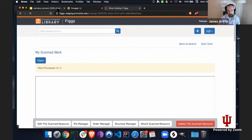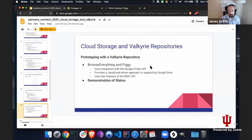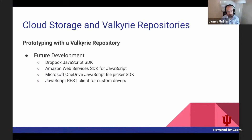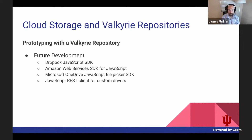From working with this Valkyrie repository implementation, I found that a JavaScript-driven approach might be the preferred approach for supporting additional cloud storage services such as Dropbox. Amazon Web Services for S3 buckets also offers a software development kit or SDK, and OneDrive also offers this. It feels more and more as if taking a very JavaScript-heavy approach, with the ability to rely upon a simple generic REST client for more customized drivers, might make more sense for supporting the other necessary drivers for a 2.0 release.